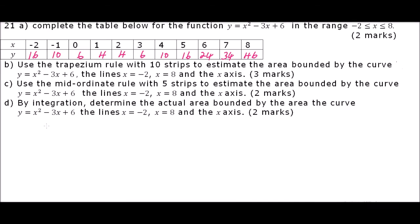Part B: we are told to use the trapezium rule with 10 strips to estimate the area bounded by the curve Y equals X squared minus 3X plus 6, the line X equals minus 2, X equals 8, and the X axis, for 3 marks. So, the trapezium rule — this is part B.